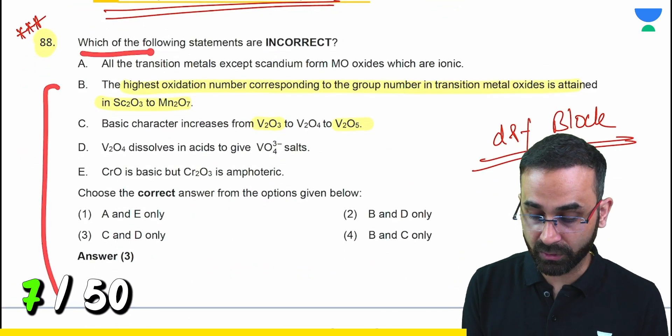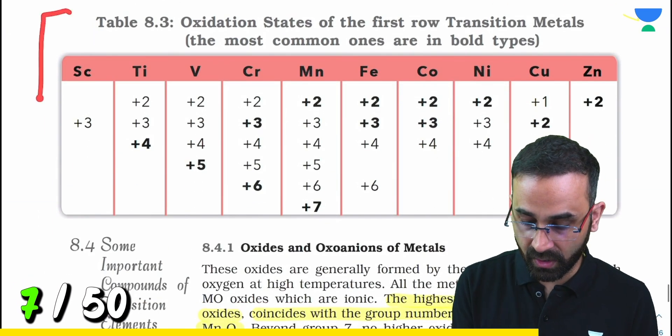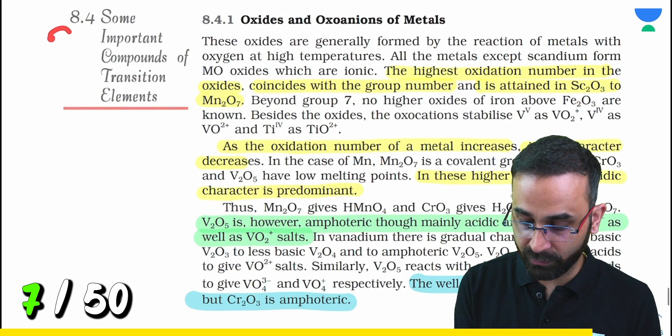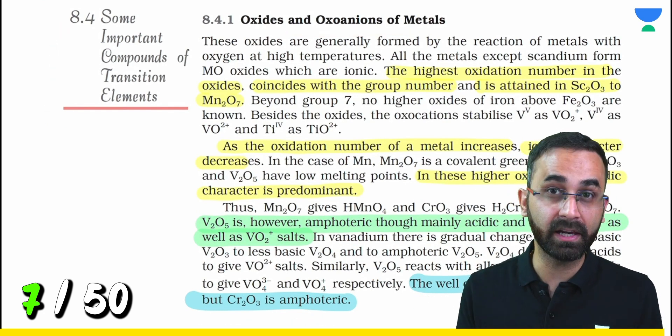Another question: which of the following statements are incorrect, directly from D and F-Block. You can see all the oxidation states data, and in article 8.4 on oxides and oxoanions, everything is mentioned clearly.